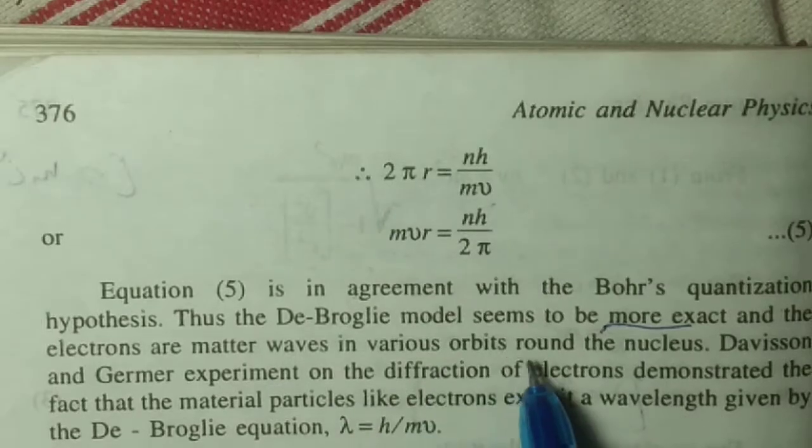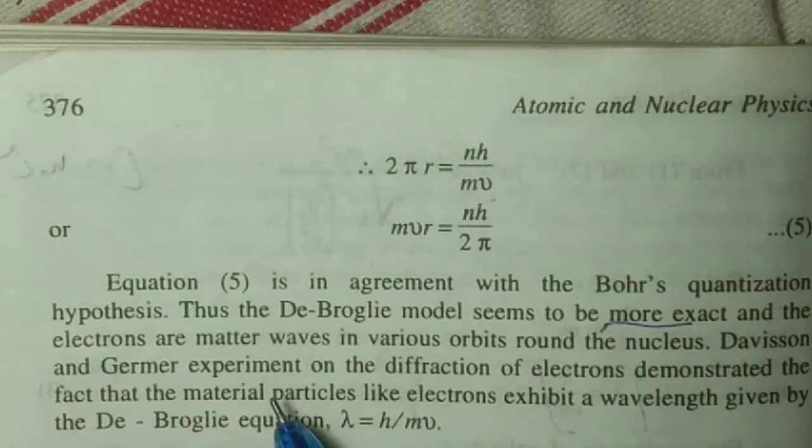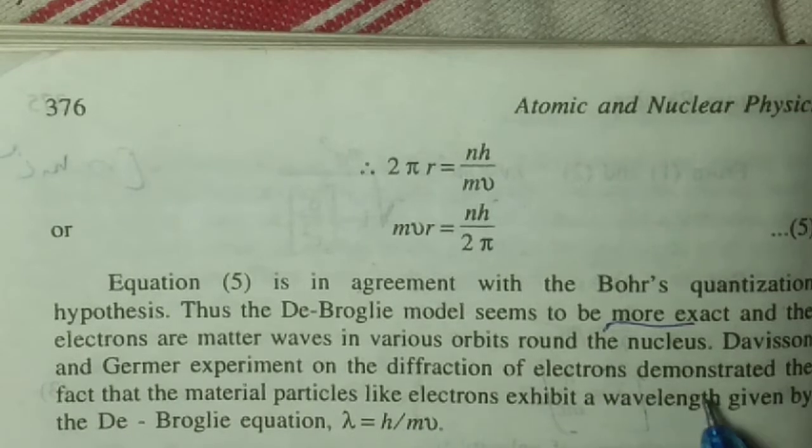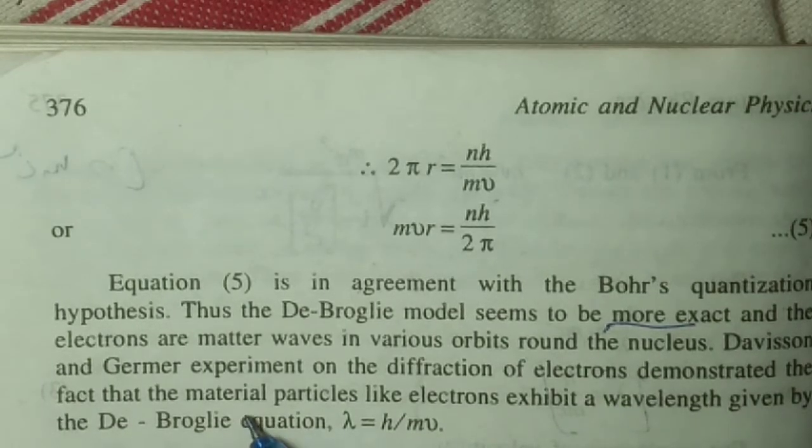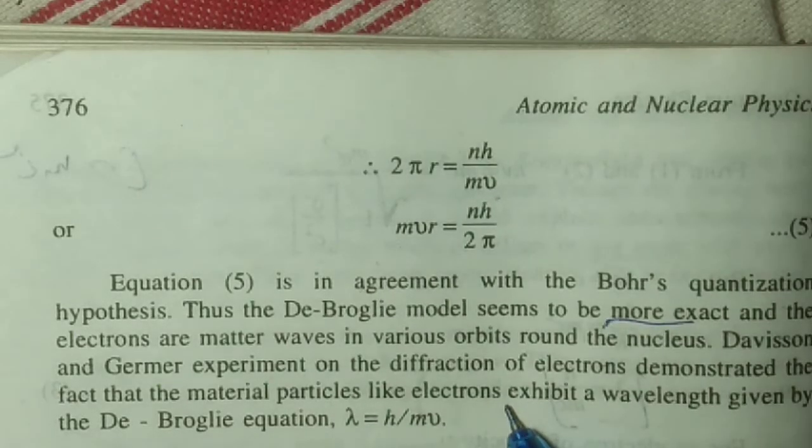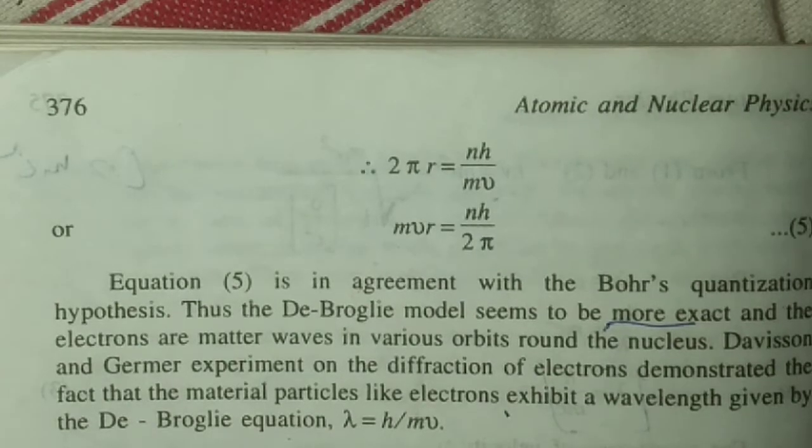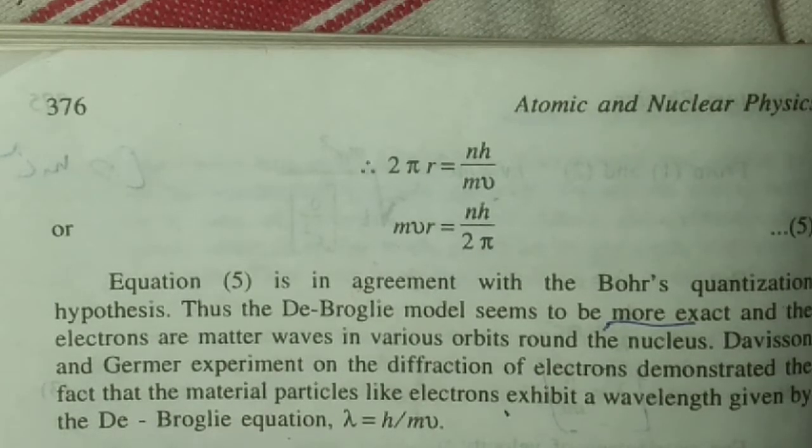This equation is in agreement with Bohr's quantization hypothesis. Thus, the de Broglie model seems to be more exact. The Davisson and Germer experiment on the diffraction of electrons demonstrated that material particles like electrons exhibit a wavelength given by the de Broglie equation, λ = h/mv.